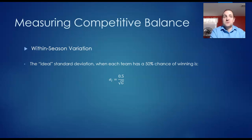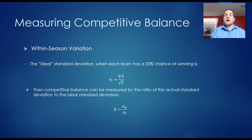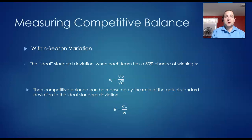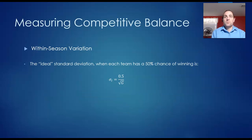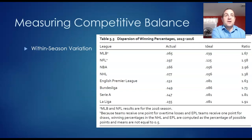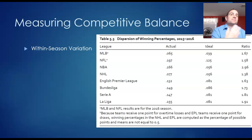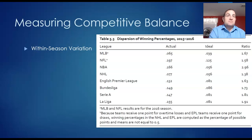Competitive balance can be measured as the ratio between the actual standard deviation sigma-W and the ideal sigma-I. Looking at this ratio, you can see that the NFL is more in line with Major League Baseball and the NHL in terms of level of competition. The NBA, even when you factor in the ideal standard deviation, is much less competitive.